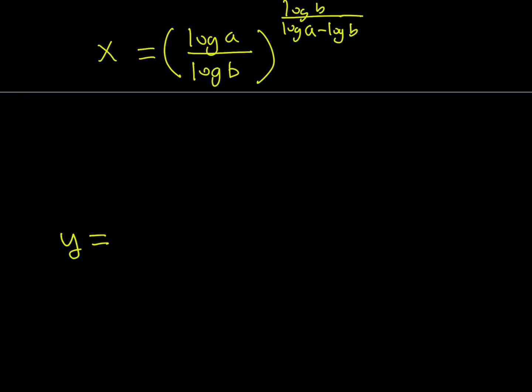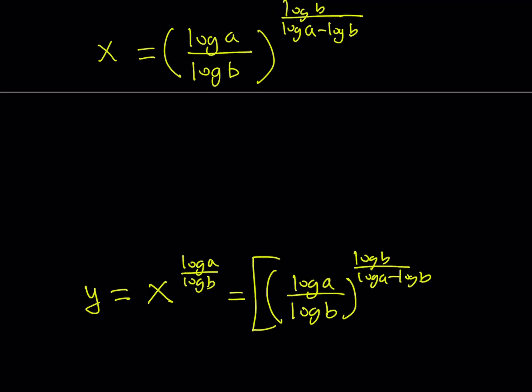Y can be written as x to the power log a over log b. And now, replace x with what it is, which is log a over log b to the power log b over log a minus log b. And then, raise it to the power, because this is just x. Raise it to the power log a over log b.